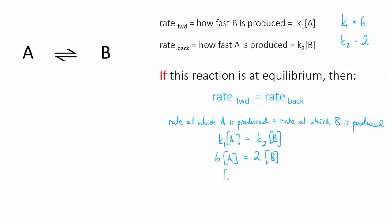And we can work out just how much higher by rearranging that equation. We get the concentration of B over the concentration of A, so the ratio of the product to the reactant concentrations equals K1 over K2, so 6 over 2, which equals 3.